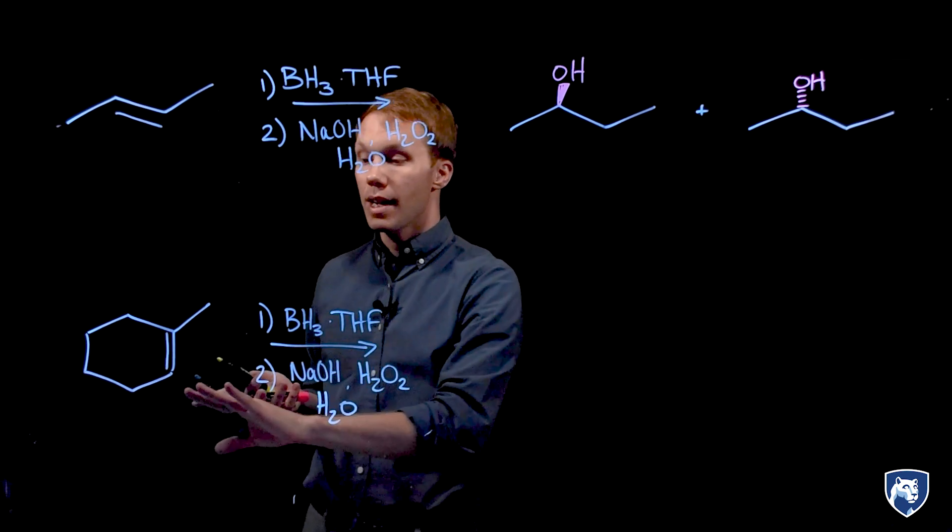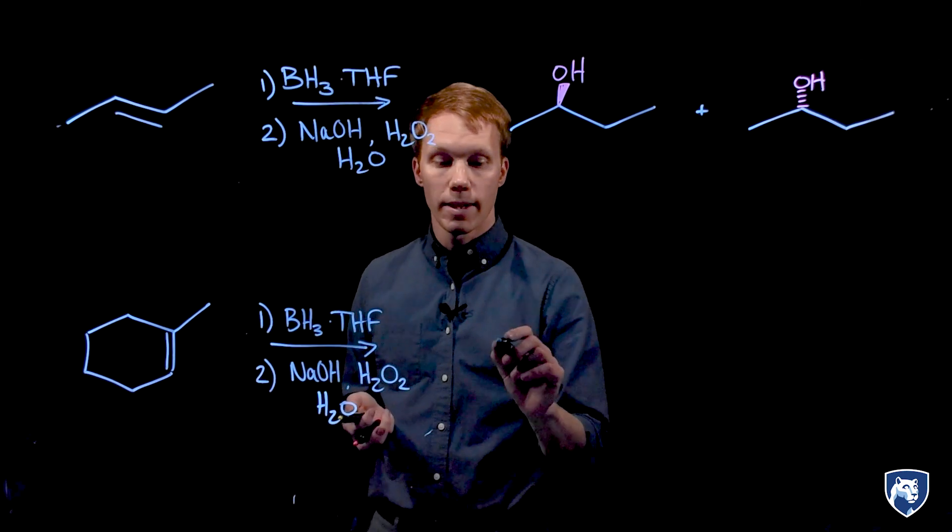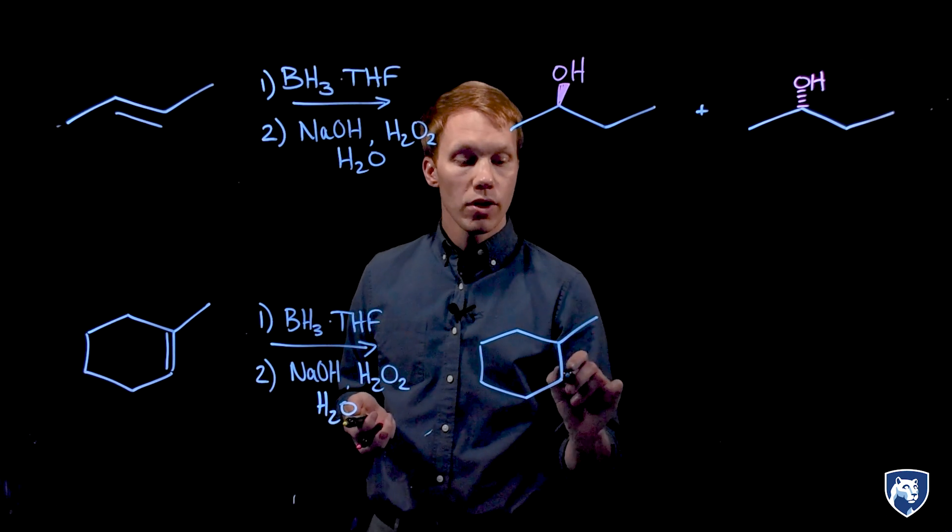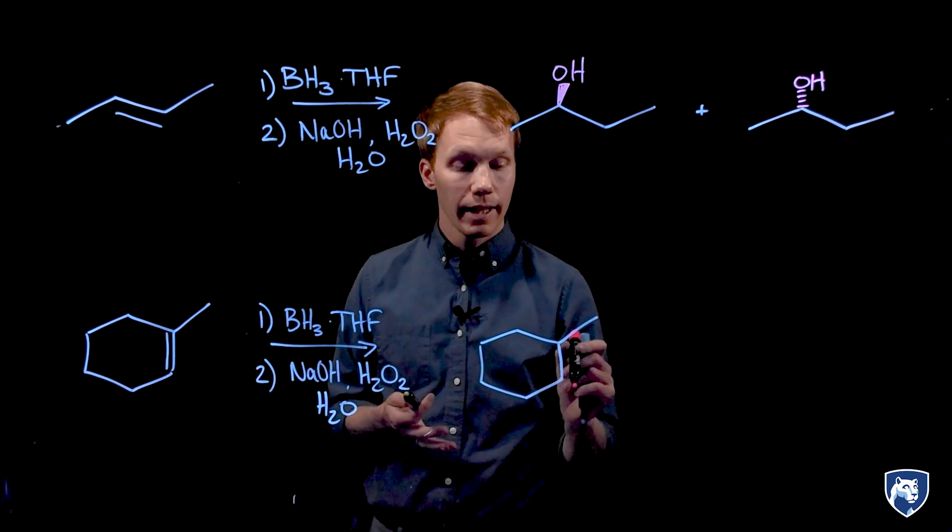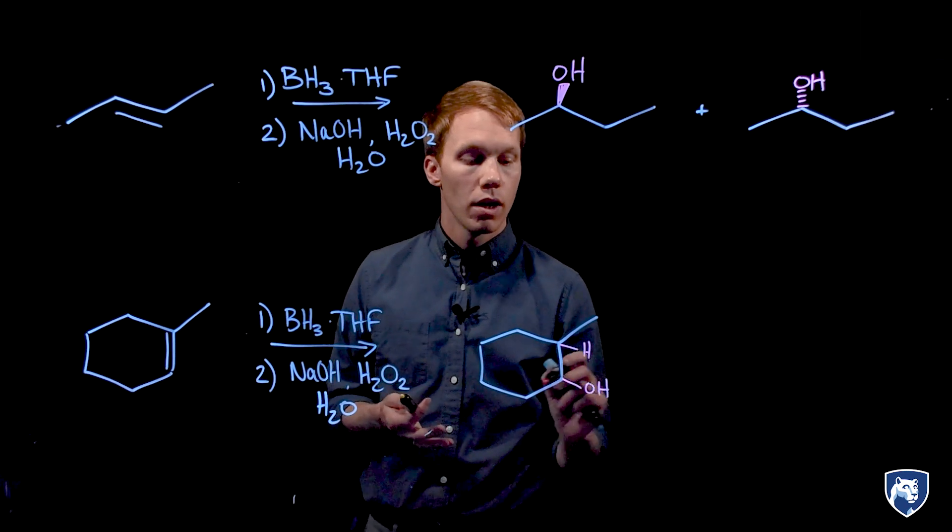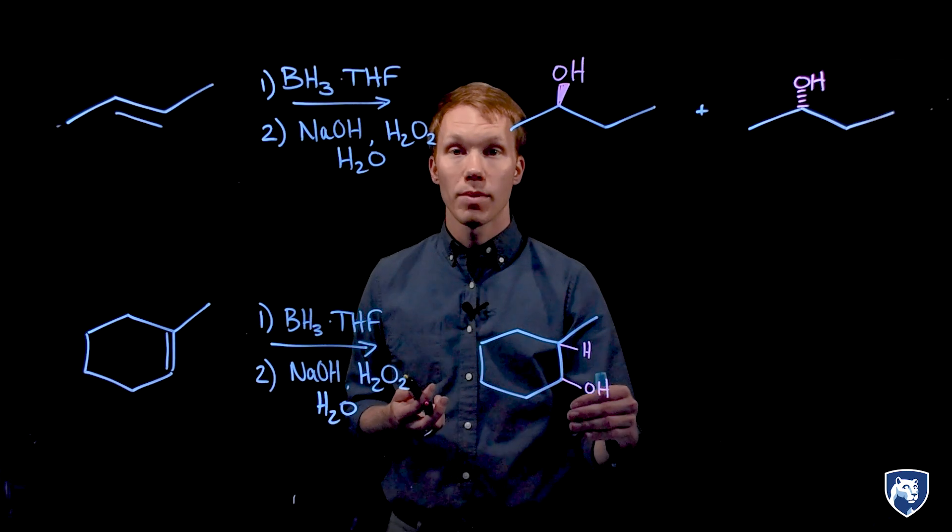Now let's look at our second example. Here we have an alkene that is differently substituted at each end. So we have the regioselectivity of adding my H and my OH in such a way that the OH group is on the less substituted carbon.